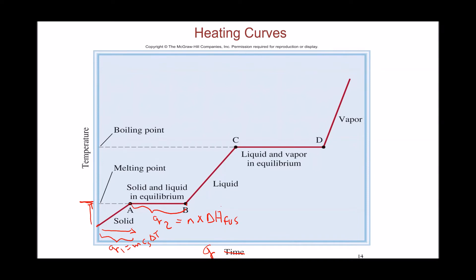After the sample is completely melted, any additional heat raises the temperature of the liquid, giving Q3 = mass × specific heat of liquid × ΔT. Then at the boiling point, all heat is again consumed entirely to boil the sample with no temperature increase. The heat consumed during boiling, Q4, is calculated using the number of moles times the molar heat of vaporization.